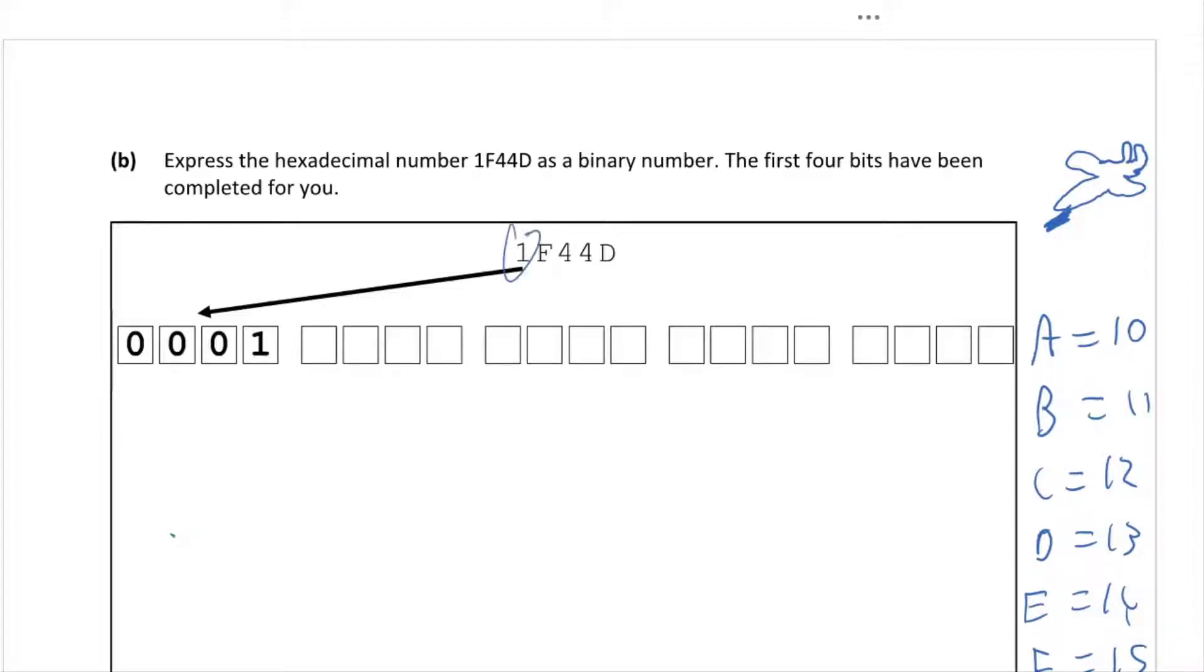So that's the first thing we need. Now we can say that we know that one is one here, so that's been done. The next digit here is F, so F is 15. We've got to turn that 15 into four digits of binary. Then there's 4 and D which is 13.